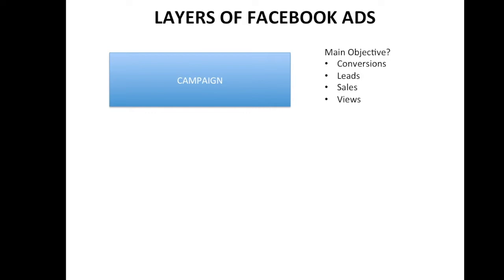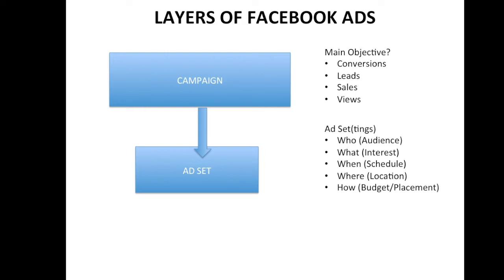Within the campaign you have sub-sectors where you actually build the ad. After your campaign you have what is called an ad set. A great way to remember it: ad set is short for 'ad settings.' This is where you put together the settings of your ad. Your ad settings consist of who, what, when, where, and why. 'Who' being your audience — who are you trying to target, who are you trying to reach in your market depending on what you are selling or promoting.